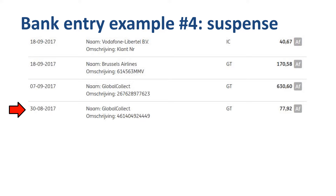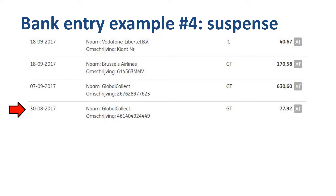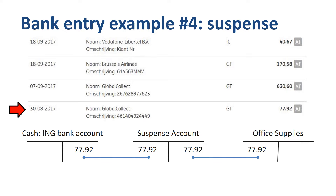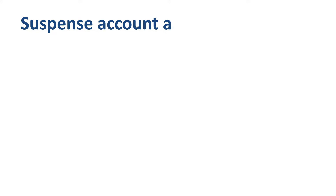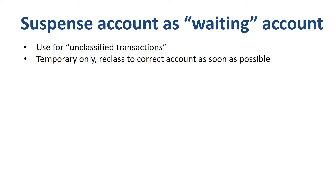Item number 4 has also gone through the payment provider Global Collect. In the bank statement detail you find that this item is for Dell products. As Dell sells a wide range of products and services, you would like to find out what specifically was bought. The person in charge of buying computer equipment is not in the office today, so in order to finish your cash journal entries you temporarily book this amount to a suspense account. When on the next day you hear that a power supply for a laptop was bought, you reclass the amount from suspense to office supplies. That's the first use of suspense accounts — you park an unclassified transaction there, temporarily, and reclass it to the correct account as soon as possible.